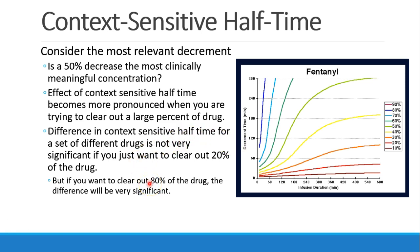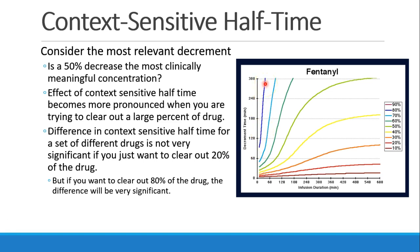The difference in context-sensitive halftime becomes more pronounced when you're trying to clear out a larger percentage of drug. Here, all of these curves are for fentanyl, and we're looking at duration of infusion versus the context-sensitive decrement time. The brownish line shows a decrement of only 10% — that shouldn't take very long, even with a long infusion. In green, we see the same 50% curve as before. But if you want to drop levels by 80%, that is going to take a very long time once fentanyl has built up in the body.